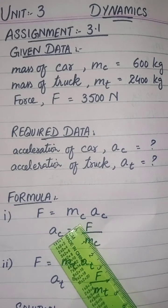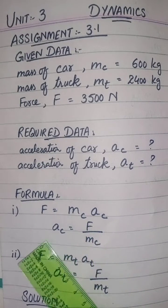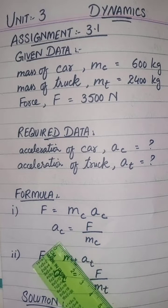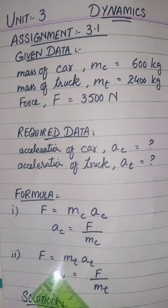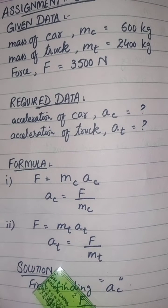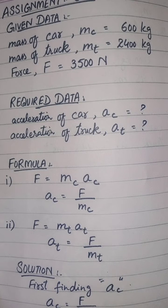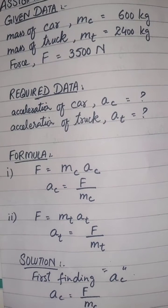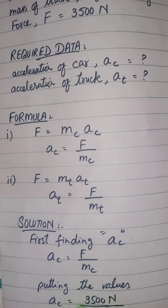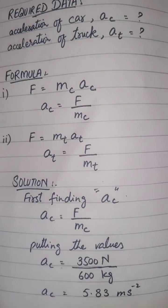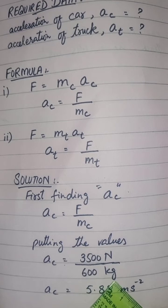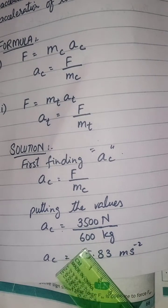According to Newton's second law, F equals ma. For the car: F equals mc × ac. So ac equals F divided by mc. Putting the values: ac equals 3500 Newton divided by 600 kilogram.